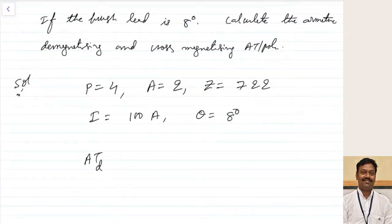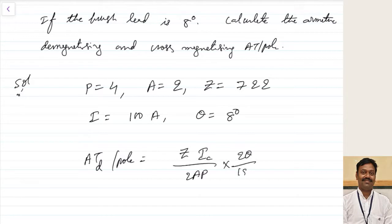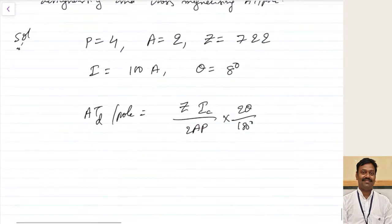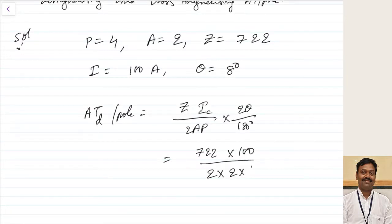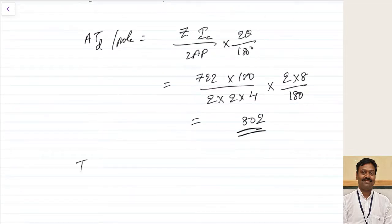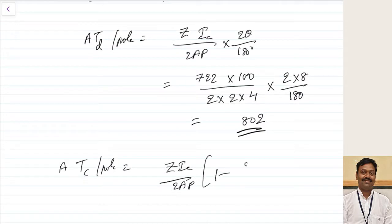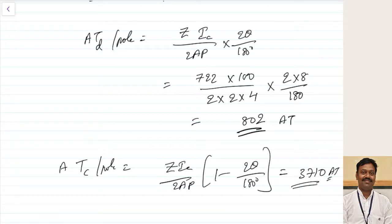Calculating AtD per pole = ZIa/(2AP) × (2θ/180°) = 722 × 100 / (2 × 2 × 4) × (2 × 8/180) = 802 ampere-turns. Similarly, the cross-magnetizing ampere-turns per pole = ZIa/(2AP) × [1 − 2θ/180°] = 3710 ampere-turns. These are the ampere-turns, so units are AT.